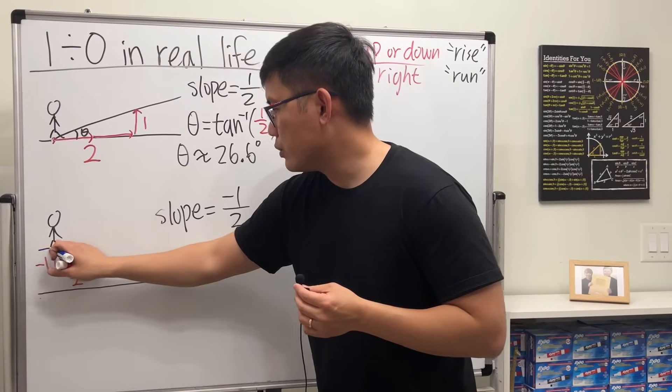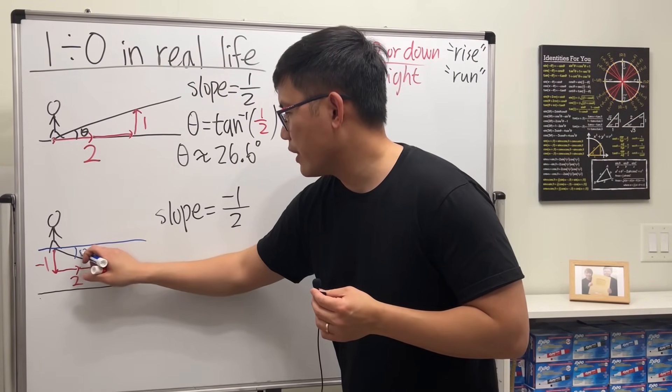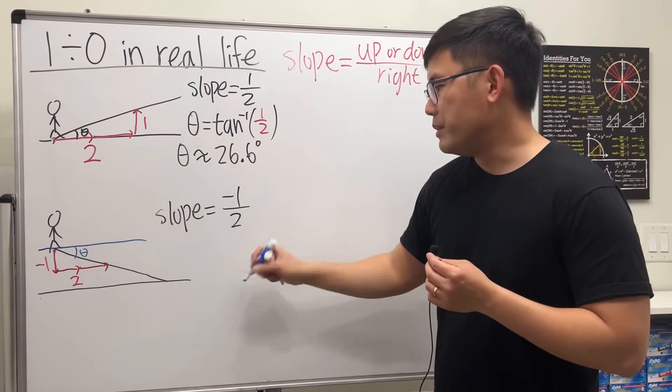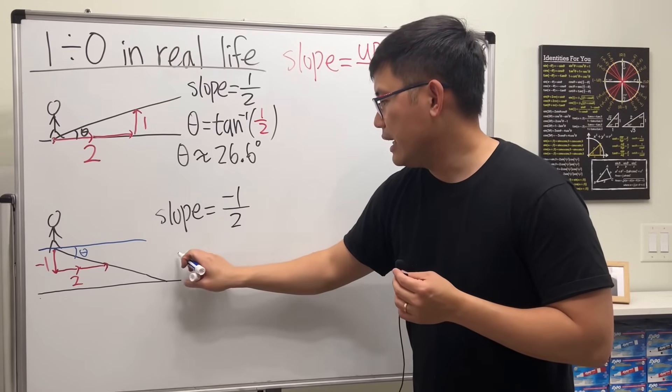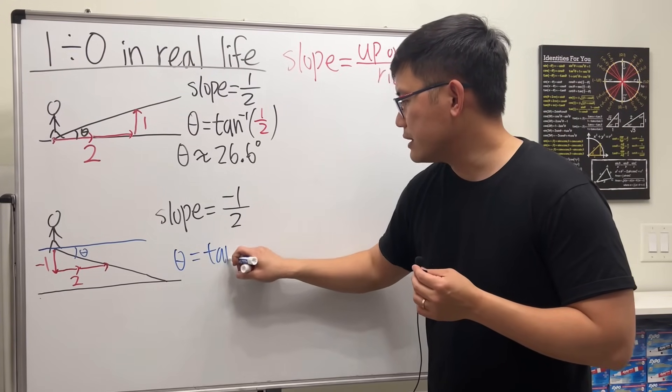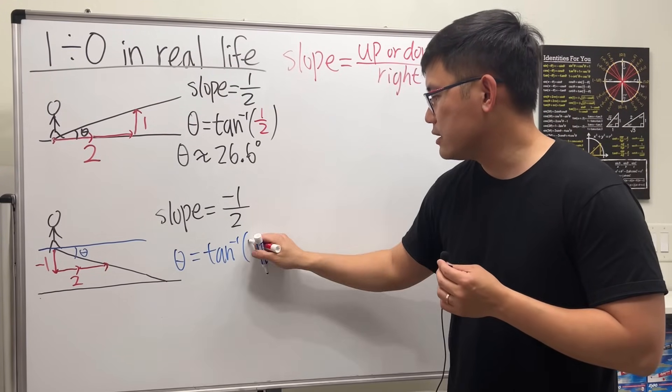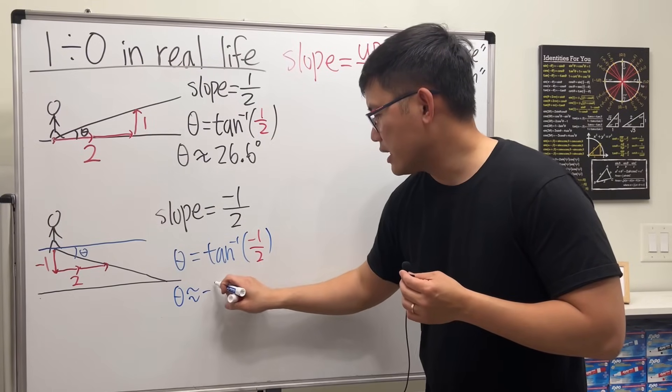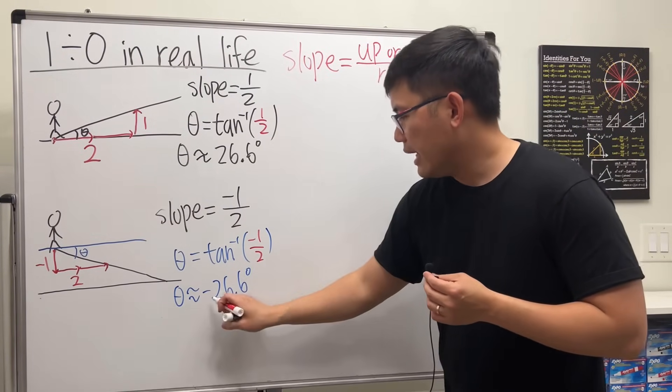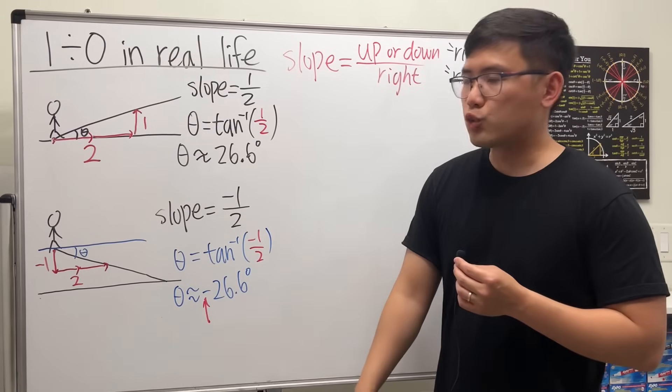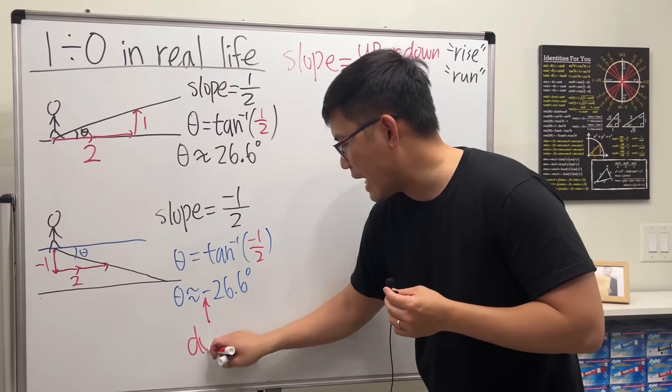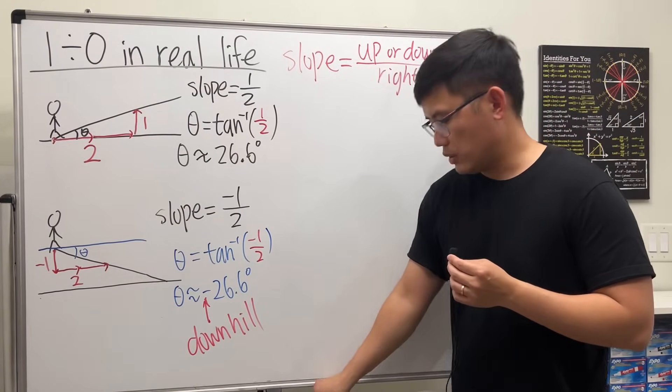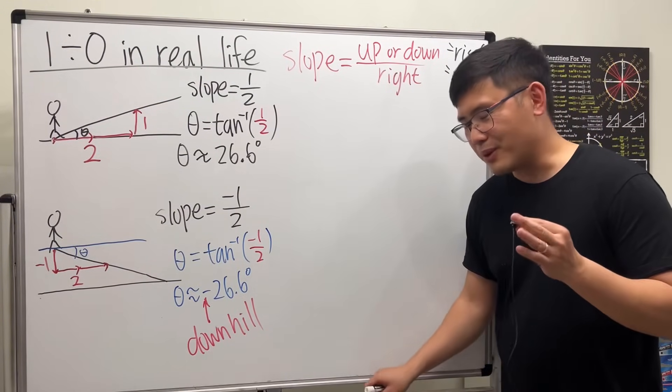It will be the same answer. You'll see that the angle theta is still the inverse tangent of whatever the slope is, and you'll get approximately negative 26.6 degrees. This negative describes the situation that we're going downhill - 26.6 degrees. Cool. Now I think you know where I'm going.